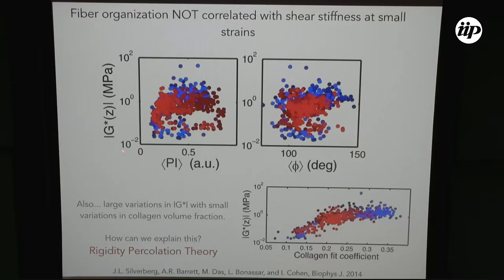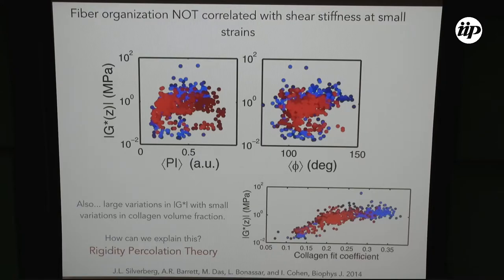So what else can be happening? My collaborators then went and looked at the shear stiffness as a function of collagen fit coefficient, which is a proxy for collagen volume fraction. What they found is that as you increase the collagen volume fraction, the shear stiffness increases and then plateaus. In fact, in this region, by increasing the collagen volume fraction by about 10%, the shear stiffness increases by about three orders of magnitude. This is reminiscent of a mechanical phase transition called the rigidity percolation phase transition, which we and others had observed previously in in vitro networks of filamentous actin. So that was the next hypothesis — whether that is what is going on here.